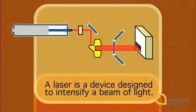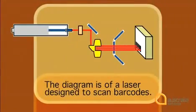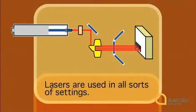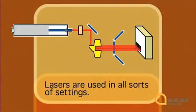In formal writing, if you were to introduce a discussion of lasers, you could structure your opening paragraph in a few ways. One idea: 'A laser is a device designed to intensify a beam of light.' Or: 'The diagram is of a laser designed to scan barcodes.' But Imogen chooses to begin by telling us what lasers are used for — she begins: 'Lasers are used in all sorts of settings.' In your introduction, you could give some background about the device.